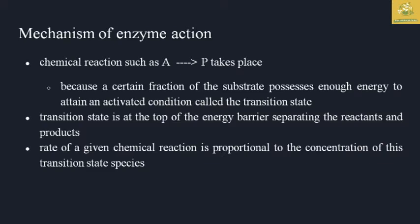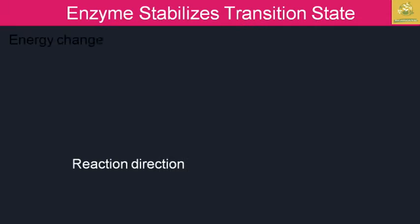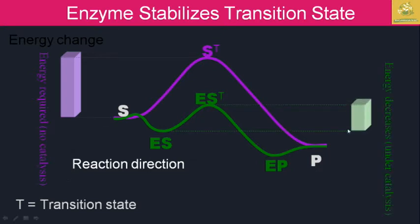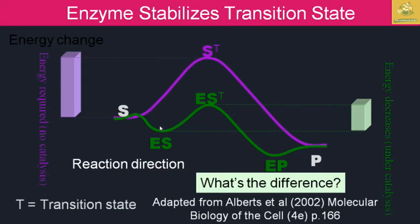The rate of the reaction is proportional to the concentration of transition state species. The enzyme stabilizes the transition state, and the energy requirement for the uncatalyzed reaction is much higher than the enzymatic reaction. The substrate forms an energy intermediate and then the product is released. This difference was first described by Alberts et al. in the book 'Molecular Biology of the Cell'.